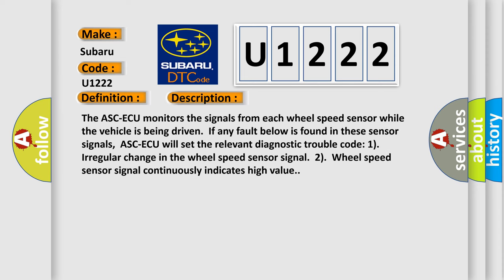The ASC-ECU monitors the signals from each wheel speed sensor while the vehicle is being driven. If any fault below is found in these sensor signals, ASC-ECU will set the relevant diagnostic trouble code: 1) Irregular change in the wheel speed sensor signal, 2) Wheel speed sensor signal continuously indicates high value.